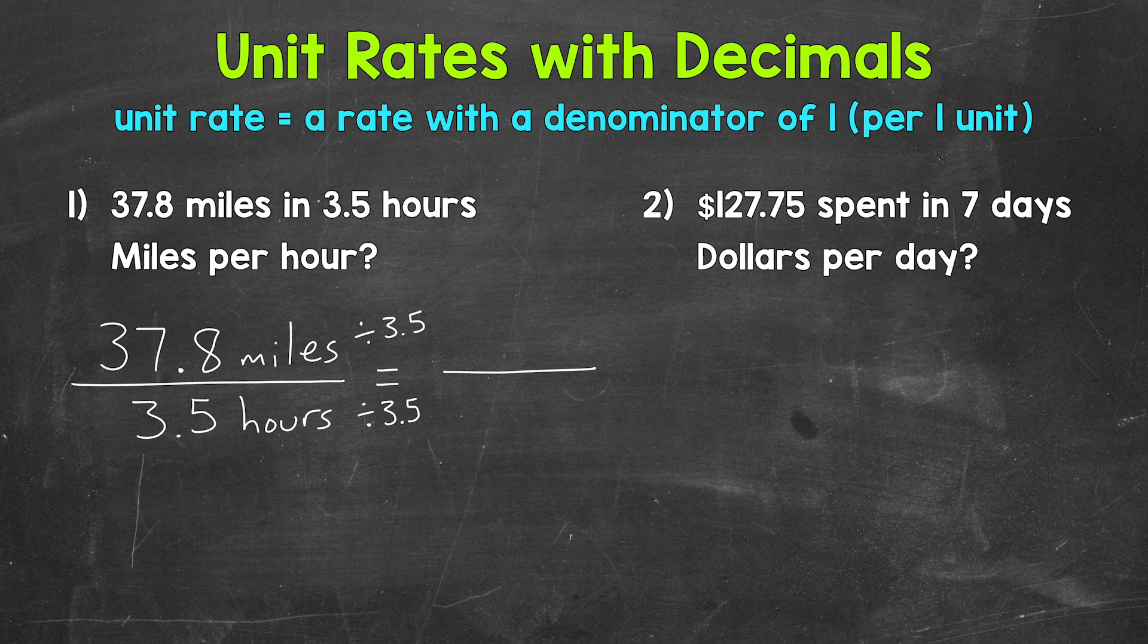So again, 3.5 divided by 3.5 gives us our denominator of 1. And that's going to be 1 hour. And then 37.8 divided by 3.5 gives us 10.8 miles.